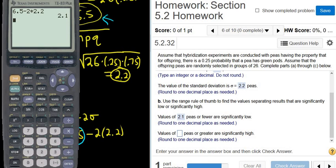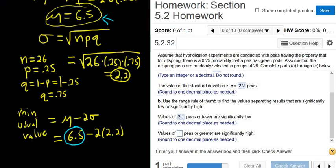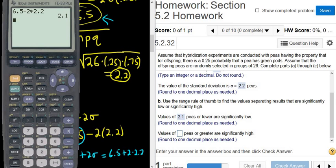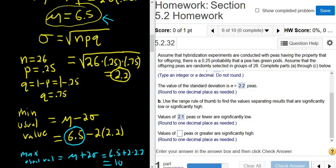And then we want the maximum usual value, so it's going to be the same, except we have a plus sign. So the max usual value is mu plus 2 sigma. So it's 6.5 plus 2 times 2.2. I think that's 10.9, but let me type it in. 6.5 plus 2 times 2.2. Yeah, it is 10.9. Good stuff. 10.9.